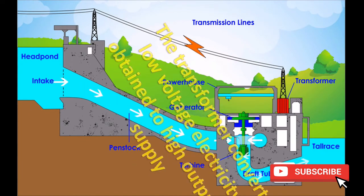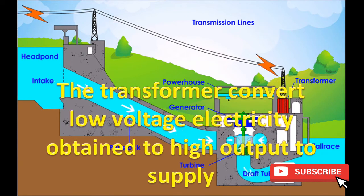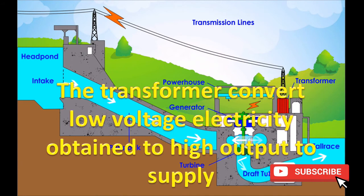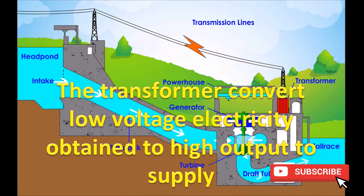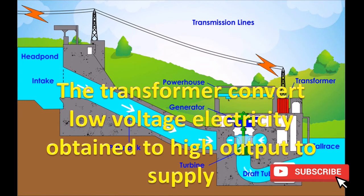The transformer converts low voltage electricity obtained from the generator to a high output supply. In this way, to supply to longer distances, high voltage AC electricity is produced.